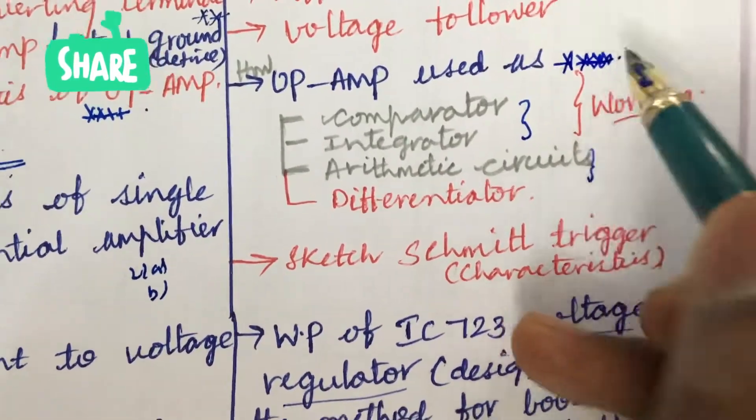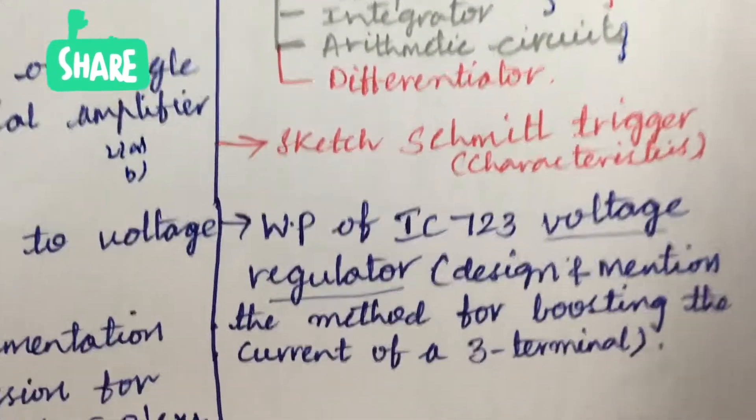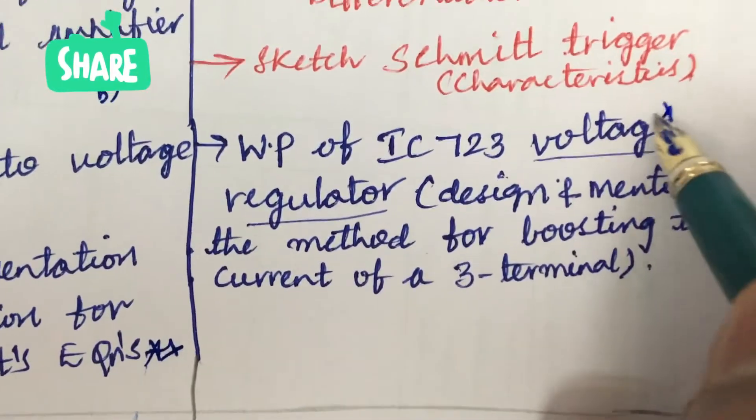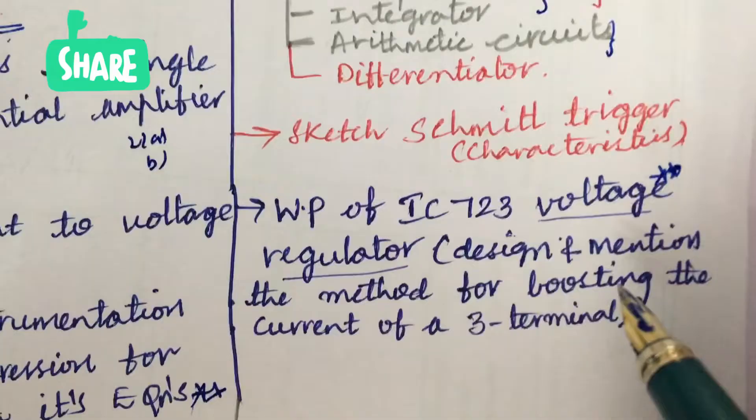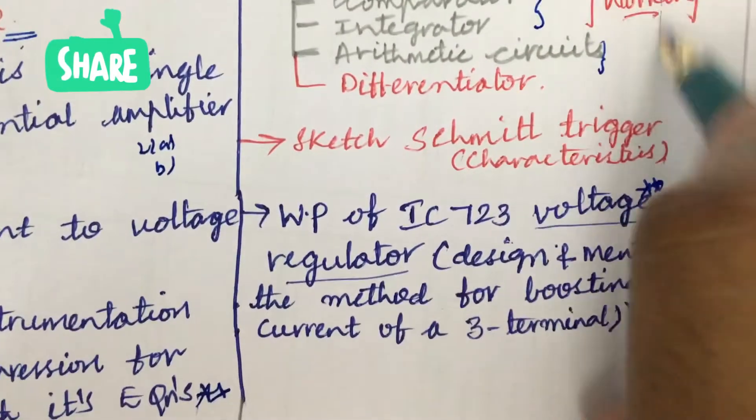And this is said to be a very important and gunshot question. Sketch Schmitt trigger and its characteristics and working principle of IC 723 voltage regulator. And design and mention the method for boosting the current of a 3-terminal.